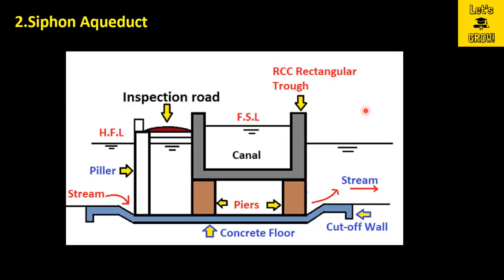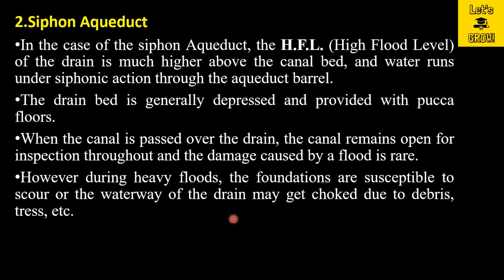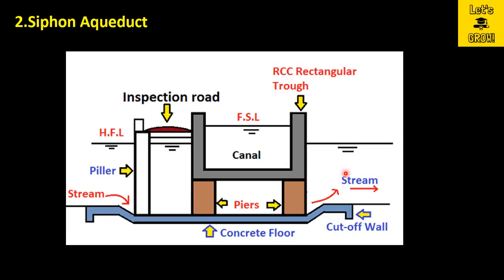The drain bed is generally depressed and provided with pucca floors — here you can see the depressed bed floor with concrete flooring. When the canal passes over the drain, the canal remains open for inspection throughout, and damage caused by a flood is rare. The inspection road is provided here and will remain always open, and there are very rare chances that the RCC rectangular trough or canal structure will be damaged in a high flood.